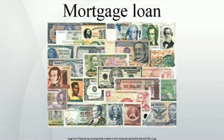Mortgage loans are generally structured as long-term loans, the periodic payments for which are similar to an annuity and calculated according to the time value of money formulae. The most basic arrangement would require a fixed monthly payment over a period of 10 to 30 years, depending on local conditions. Over this period the principal component of the loan, the original loan, would be slowly paid down through amortization.